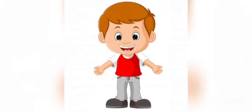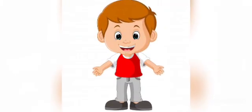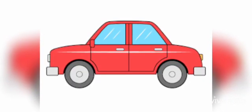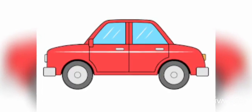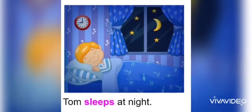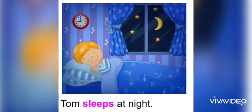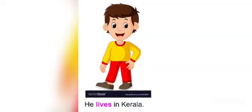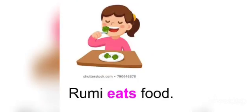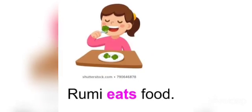Children, while talking about one person or thing, we use 's' with the action word. For example: She smells the flower. Tom sleeps at night. He lives in Kerala. Rumi eats food.